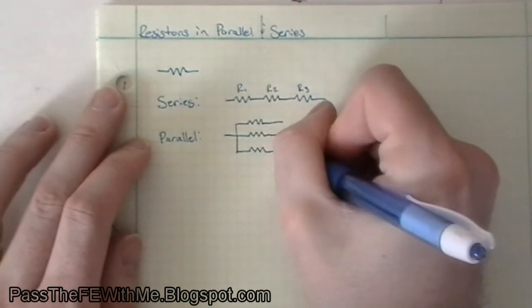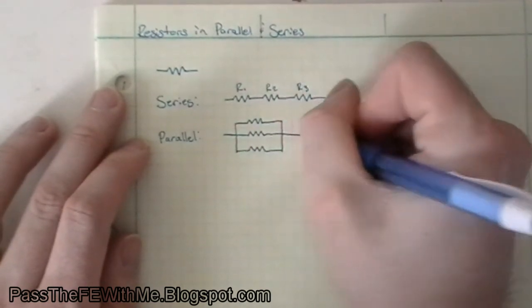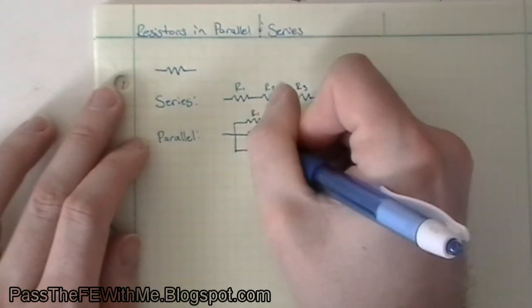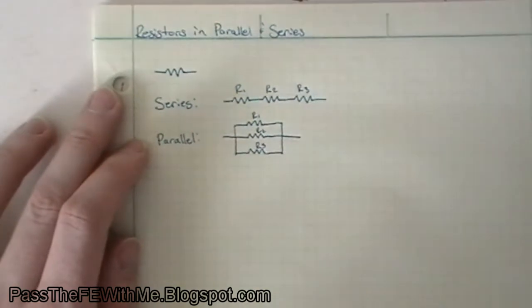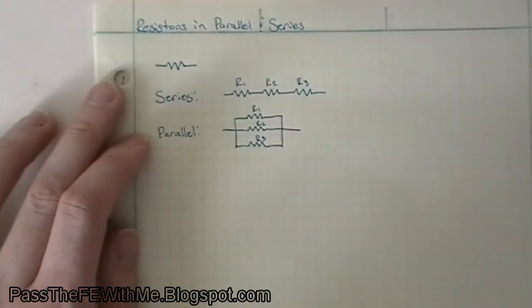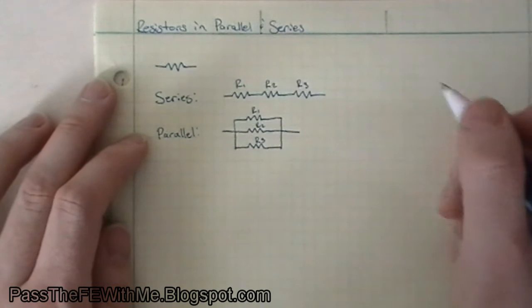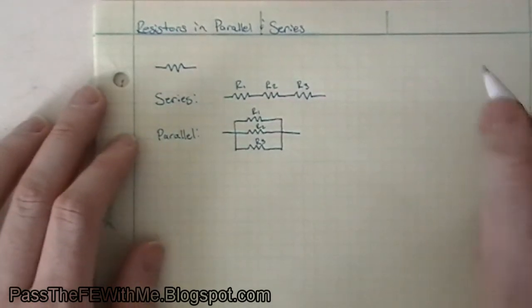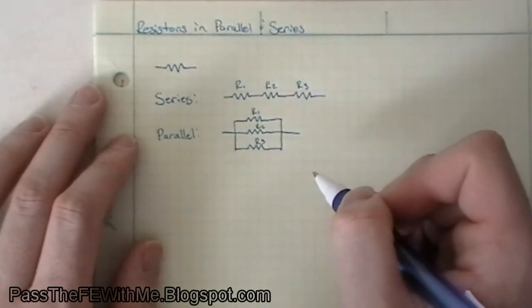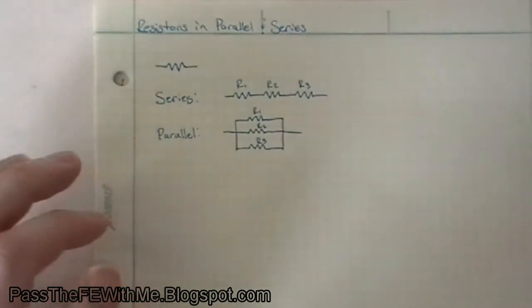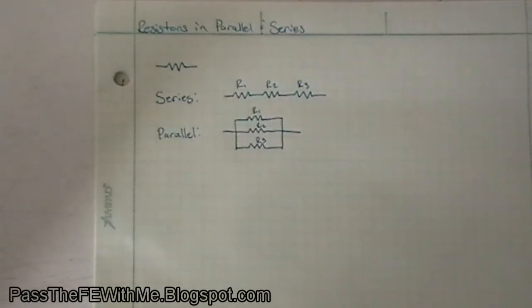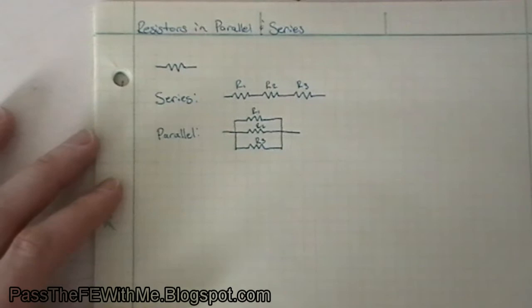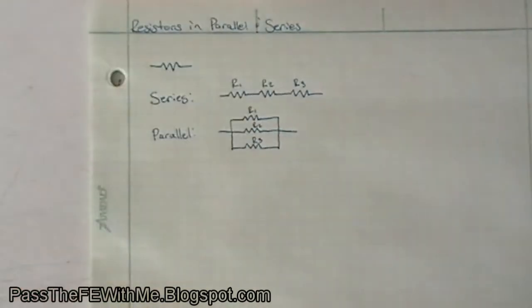Anyway, this isn't a spelling test, so that's good. So you see this would be in parallel, okay? And you might be asked to determine an equivalent resistance because you can take all of these and just analyze the circuit and you can represent them as one resistor that's equivalent to three resistors or two resistors, it doesn't matter however many you have in your circuit.